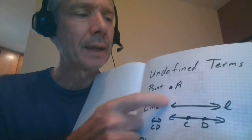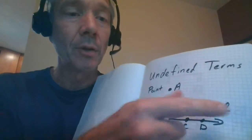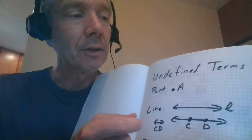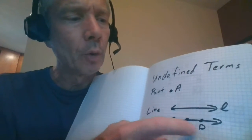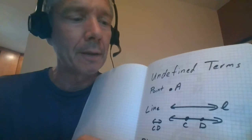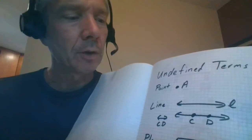It's usually done with a capital letter. We have a line which is infinitely thin but goes on in both directions forever, and it's usually indicated with a lowercase letter often in cursive, or with two points on the line. CD with arrows in both directions, or DC would work too.